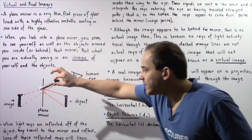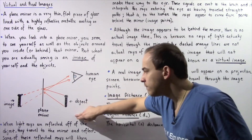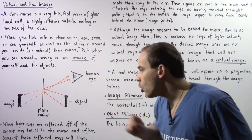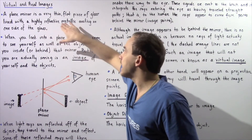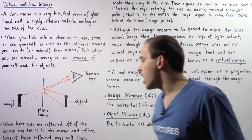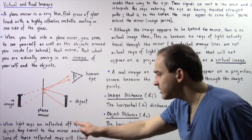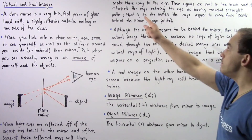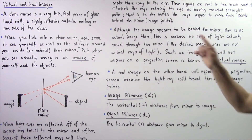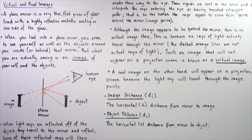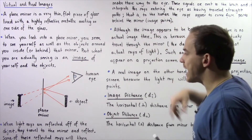When light rays are reflected off the object, those rays of light travel to the mirror and reflect because of the highly reflective metallic coating on one side of the glass. Some of these reflected rays eventually make their way to the human eye. These signals are sent to the brain, and the brain interprets the rays entering the eye as having traveled straight paths. To the human, the rays appear to come from points behind the mirror, and these points are known as image points.